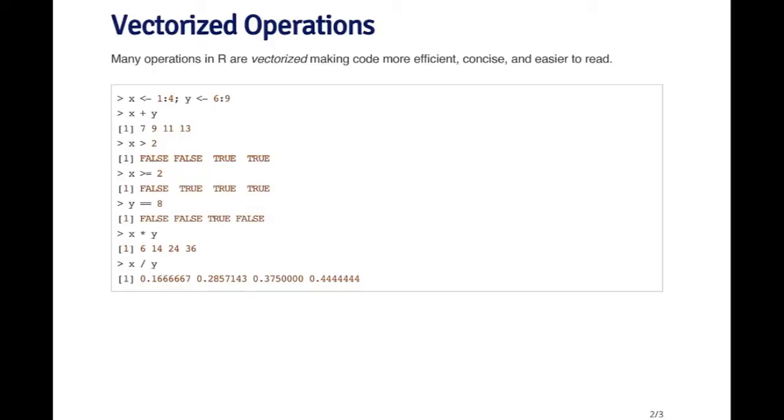Similarly, you can use the greater than or less than symbols to give you logical vectors. For example, x greater than two—since x is a vector of four numbers, which number are you comparing to two? Well, the vectorized operation compares all the numbers to two and gives you a vector of falses and trues depending on which numbers are bigger than two. You can also use greater than or equal to, and the double equal sign tests for equality, taking each element of y and testing whether it's equal to eight.